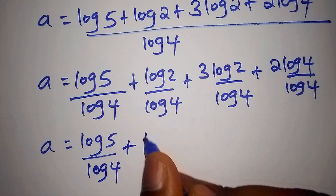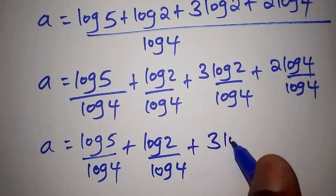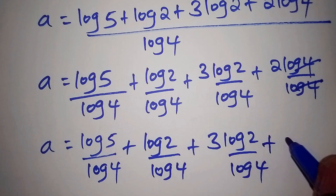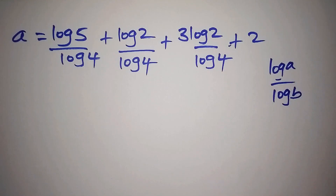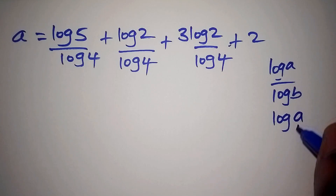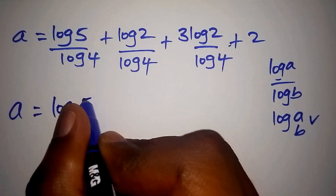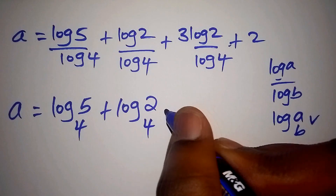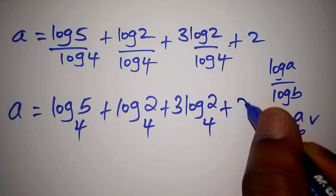Continuing, we have plus log 2 all over log 4, plus 3 times log 2 all over log 4, and log 4 over log 4 cancels to give plus 2. Using the change of base formula — log of a over log of b equals log of a to the base b — so a equals the log of 5 to the base of 4, plus the log of 2 to the base of 4, plus 3 times the log of 2 to the base of 4, plus 2.